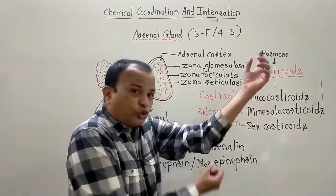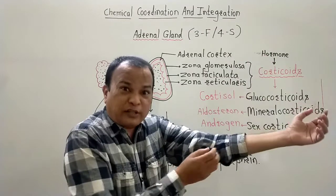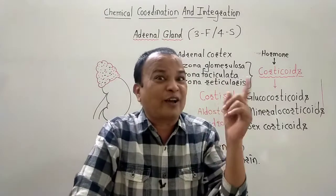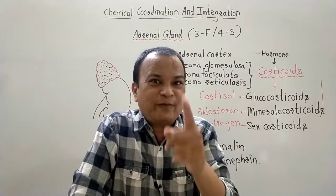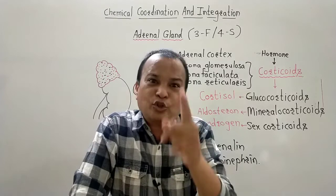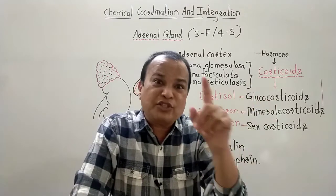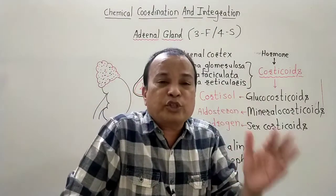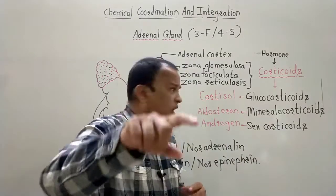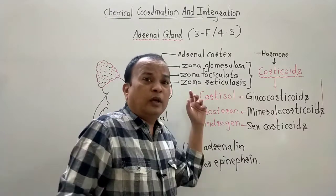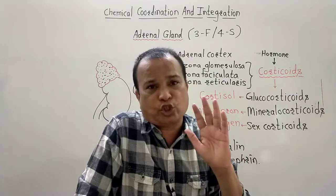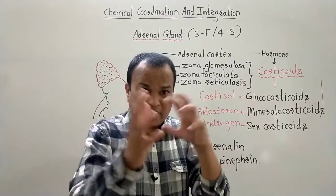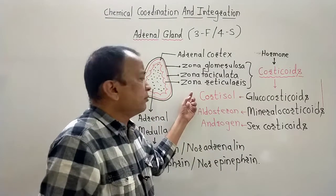Cortisol also stimulates the bones for the formation of RBCs — similar to the function of T3 and T4 thyroid hormones. Additionally, cortisol plays an important role in cardiovascular functions and kidney functions, helping regulate and control the functioning of both the heart and kidneys.